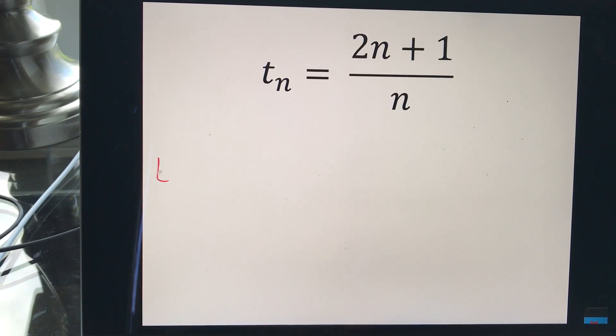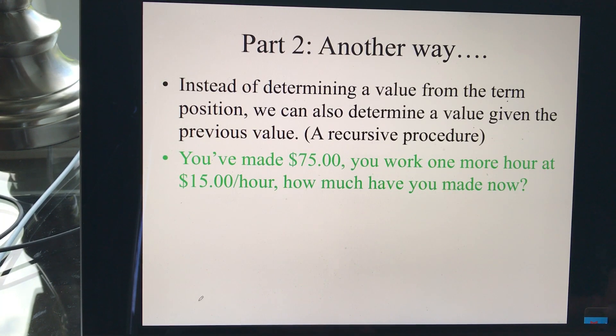Same thing here. We could find whatever the third term if we wanted. It would be 2 times 3 plus 1 over 3. We just plug it in. 6 plus 1 is 7 over 3. And it's okay to have a fraction.